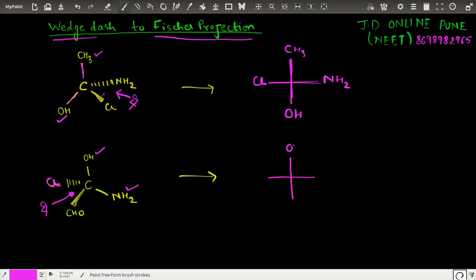So on top we have OH, below we have NH2. To my left this is Cl and to the right this is CH3. So in this way we convert the wedge dash into the Fischer projection.